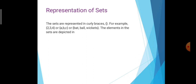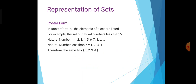The sets are represented in curly braces. For example, {2, 3, 4} or {A, B, C} or {bat, ball, wickets}. The elements in the sets are depicted in roster form and set builder form. First, roster form — we are going to learn about roster form.